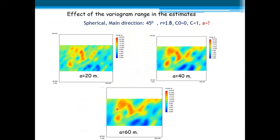Now we are going to see the effects of the variogram models on the estimates — how the estimated maps change with the variogram parameters, and how this depends on our choice of variogram parameters. Let us do this simple academic exercise: compute the estimated maps with the previous variogram model but changing the range. We calculate the estimated map with ranges of 20 meters, 40 meters, and 60 meters, maintaining the other parameters.